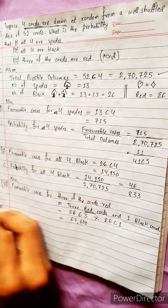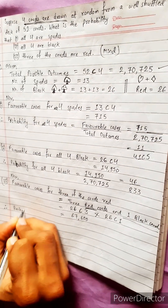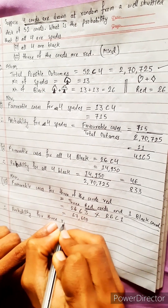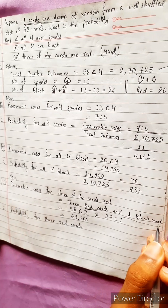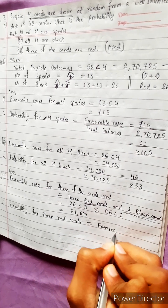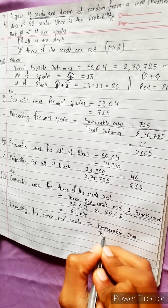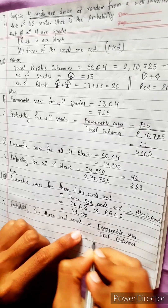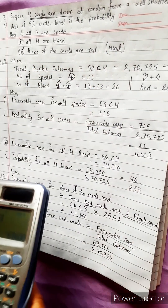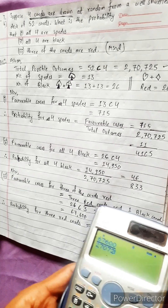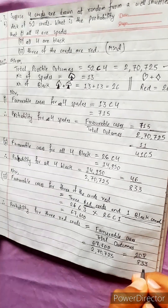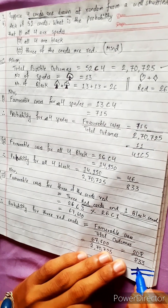Therefore, probability of three red cards and one black card equals favorable cases divided by total possible outcomes: 67,600 divided by 2,70,725, which simplifies to 208 by 833. This means out of 833 chances we can get the result 208 times.